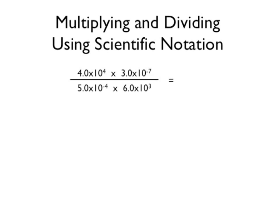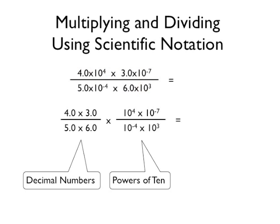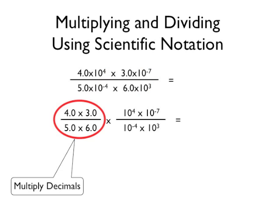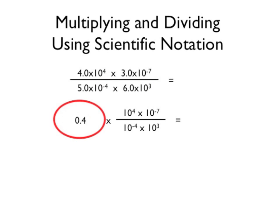Since you can group different factors of this as needed, we will group all the decimal numbers together and all the powers of 10 together. For the decimal numbers, you have 4 times 3 divided by 5 times 6, which gives 0.4.